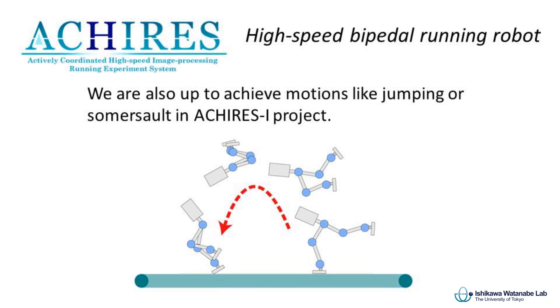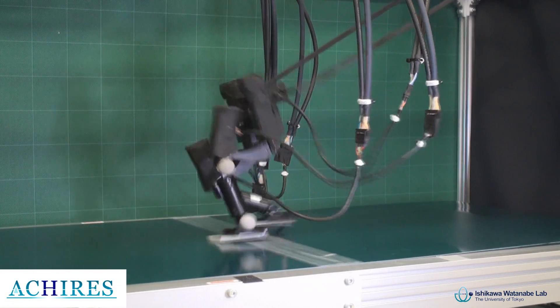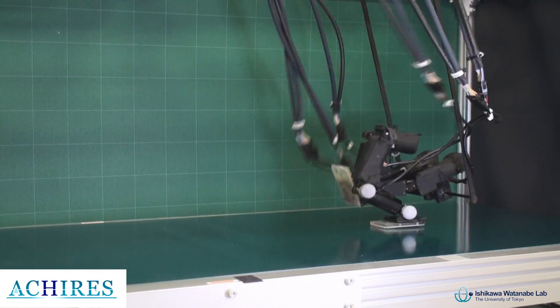We also addressed the task of somersaulting. While running, the robot takes a big swing with one foot and jumps. After jumping, both legs curl up for high-speed rotation in the air.